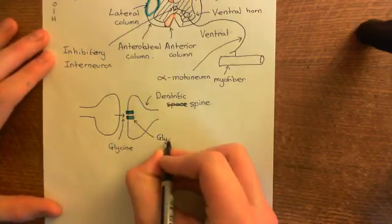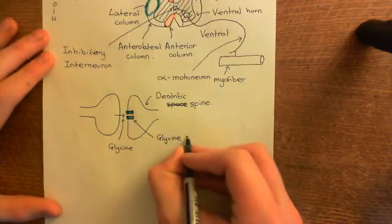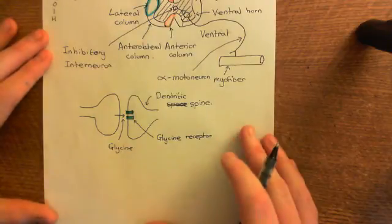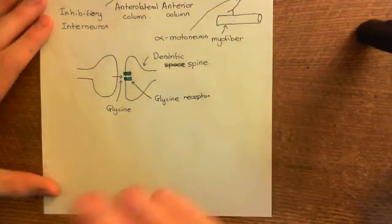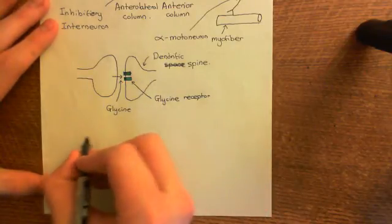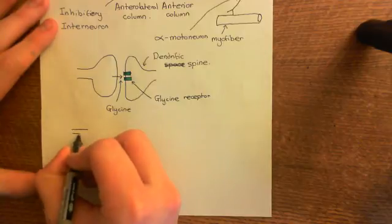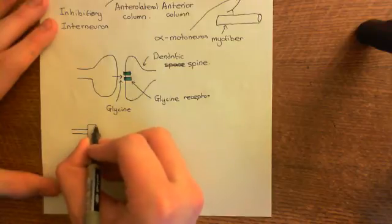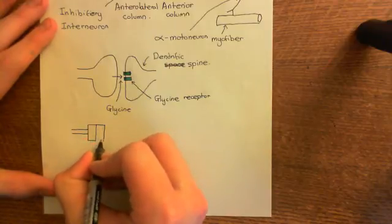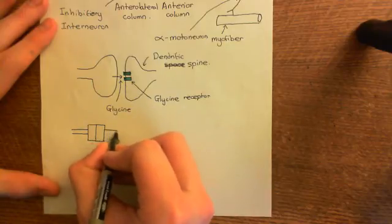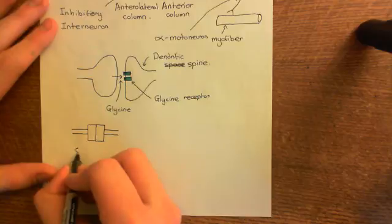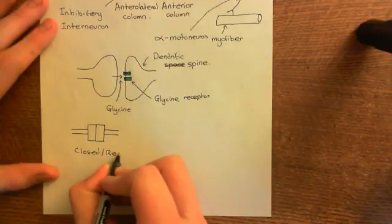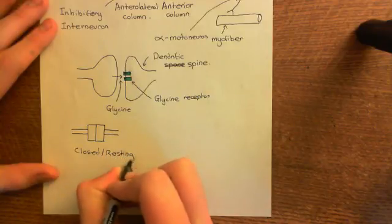So what's going to happen when glycine binds to the glycine receptor? Glycine will bind to the glycine receptor and cause it to open. You start off with your glycine receptor in a closed but resting state — this is important because there's also going to be a closed desensitized state, which is different from the closed resting state. In the closed resting state, you have no ligand bound, but if a ligand does bind, you can go into the open state. We'll continue this discussion in the next video.